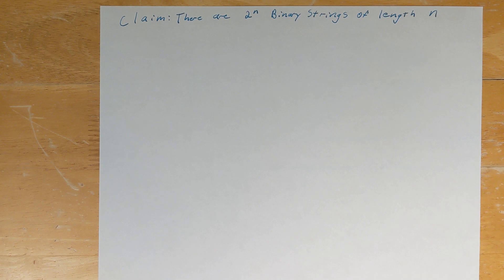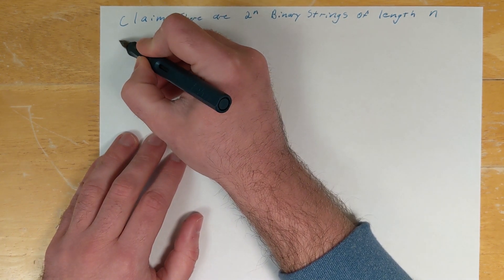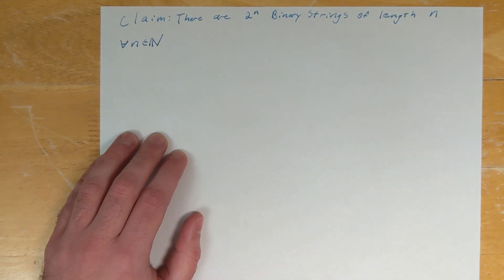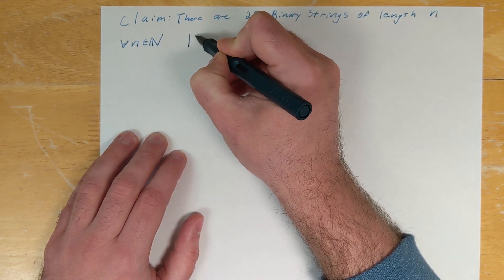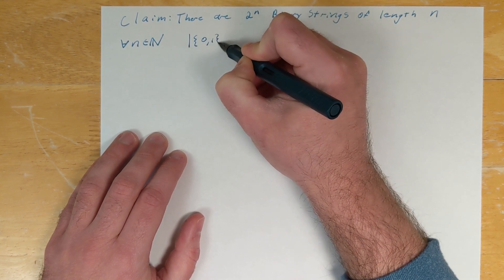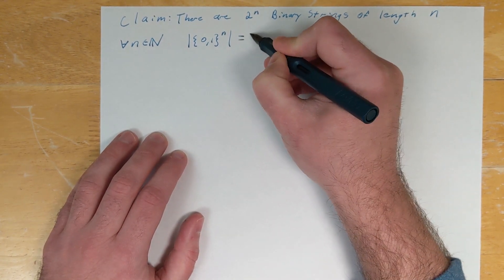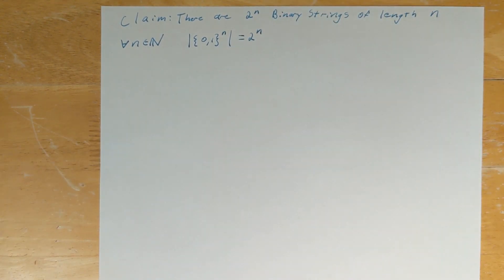Let's do an example of a proof by induction. What we're going to show is that the number of binary strings of length n equals 2 to the n. More precisely, for every natural number n — for every n that belongs to the set of natural numbers — we're trying to show that the size of the set {0,1} to the power n, which is the set of all binary strings of length n, is going to be equal to 2 to the n.